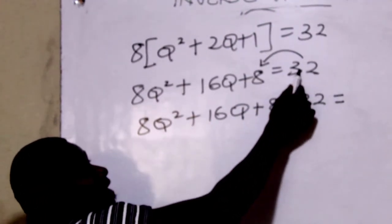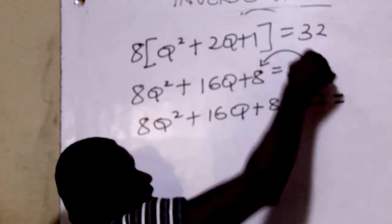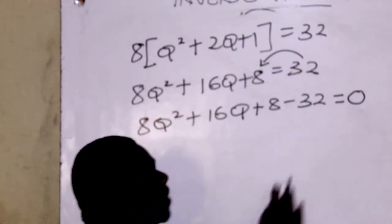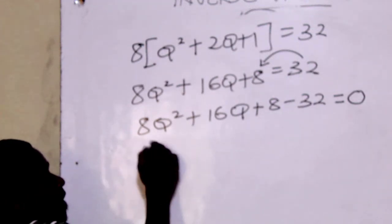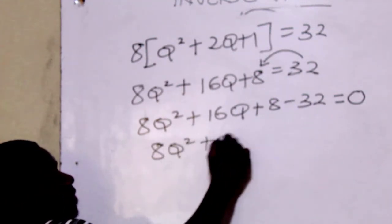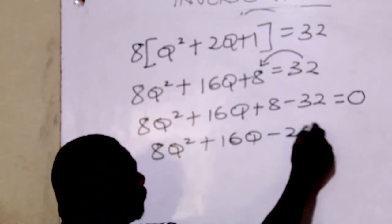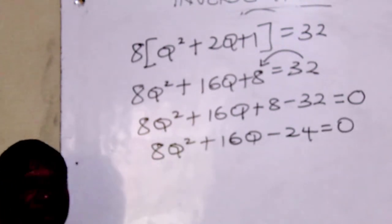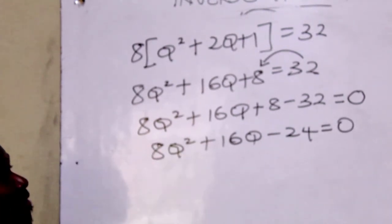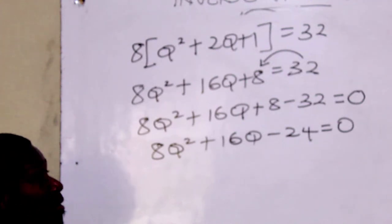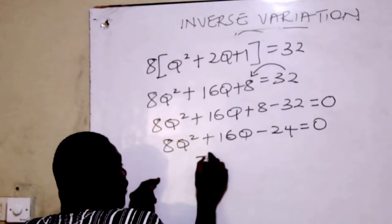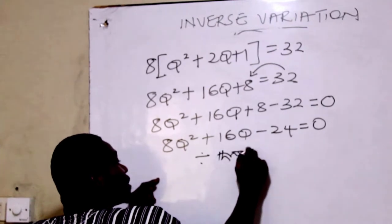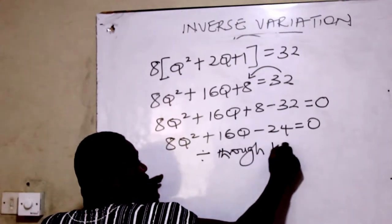If 32 leaves here, it leaves 0 in this place. That is how the quadratic equation happens to have 0. 8KL squared plus 16KL minus 24 equals 0. Now we have to solve this quadratic equation. The numbers here are too big, so we try to divide through. Let's reduce the numbers, divide through by 8.